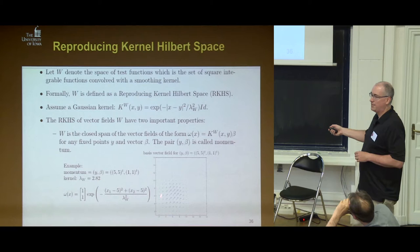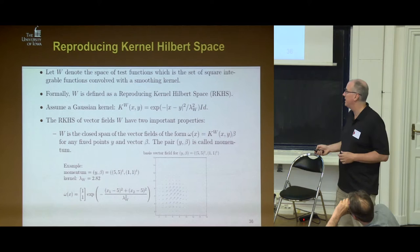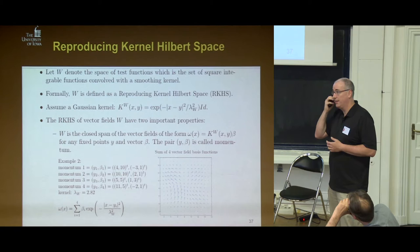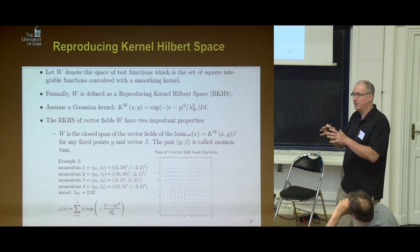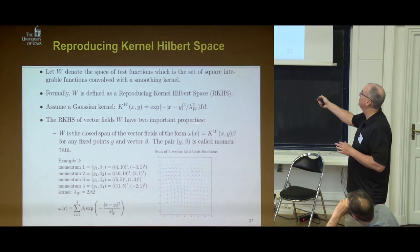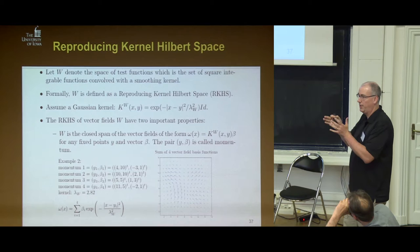Think about these basis functions — I can take them and place them anywhere in space and add them up. As I change lambda, I get more focused or more broad vector fields. The second property of the reproducing kernel Hilbert space is that it's endowed with an inner product. When I take the inner product of two smooth vector fields (the basis functions), I get a nice closed-form solution: basically take the dot product of the two vectors and multiply by the Gaussian distance between them. The further the two momenta are from each other, the less influence they have.